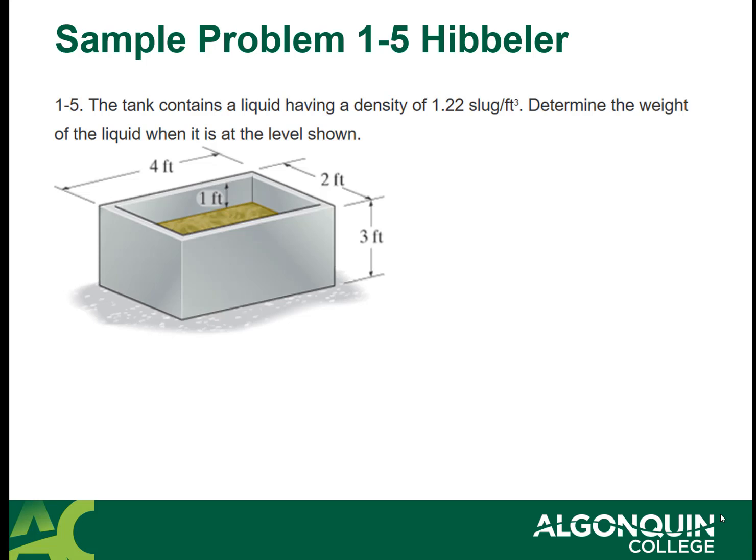Let's look at a problem from the Hibbeler textbook, problem 1-5. The tank shown here contains a liquid having a density of 1.22 slugs per foot cubed. Determine the weight of the liquid when it is at the level shown. You can see it's a three-foot deep tank and it's one foot from the top, so it's two feet deep, four feet long, two feet wide.